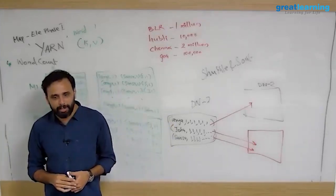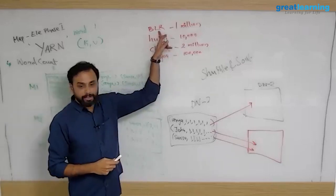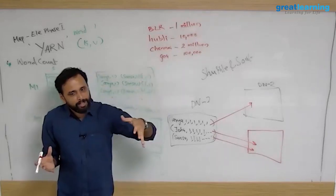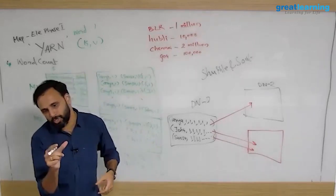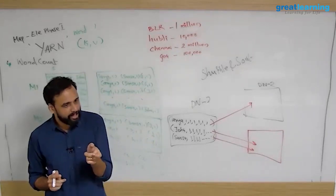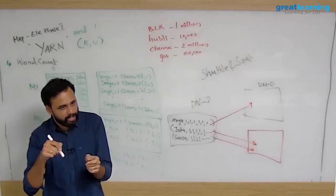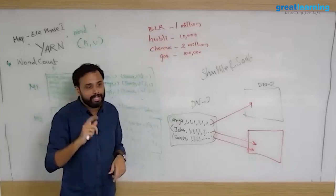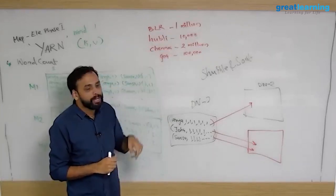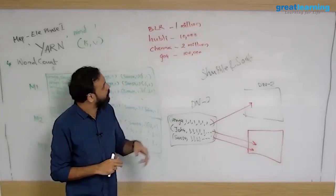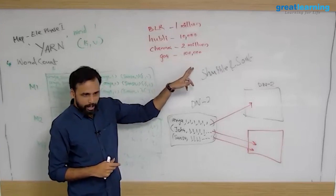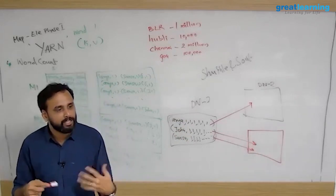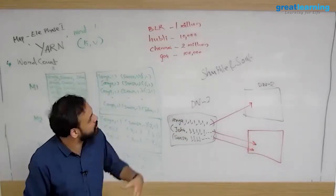They wanted to figure out branch-wise totals. So the branch code becomes the key and each transaction amount becomes the value. For Bangalore you get one million key-value pairs, for Hubli ten thousand, Chennai two million, Goa one hundred thousand. This is called data skewness — somewhere you have more data, somewhere less.